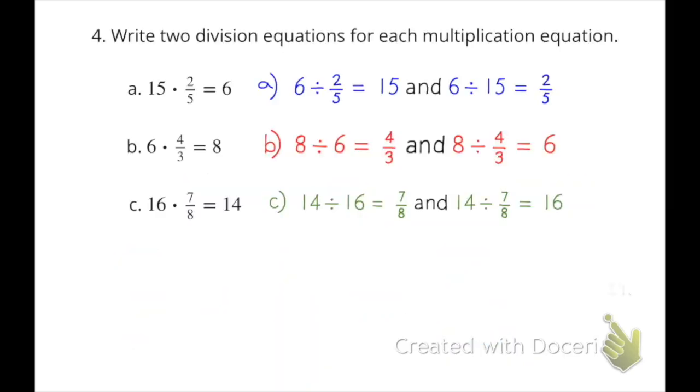Number four. Write two division equations for each multiplication equation. Part A. Fifteen times two-fifths equals six. That can be written as six divided by two-fifths equals fifteen and six divided by fifteen equals two-fifths.